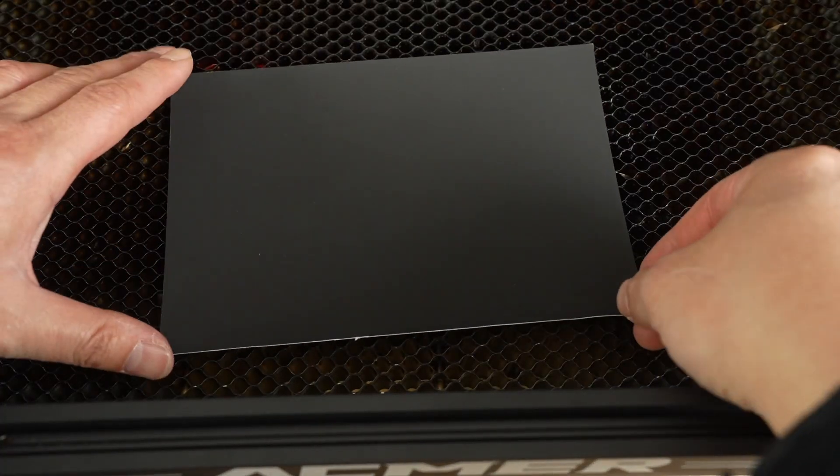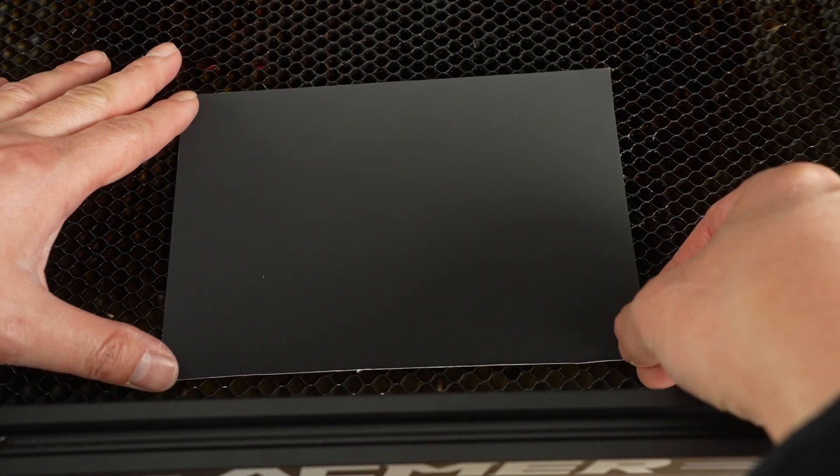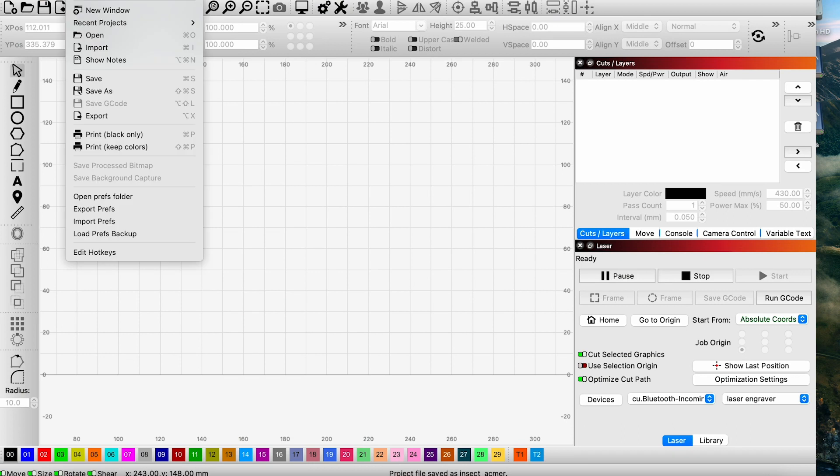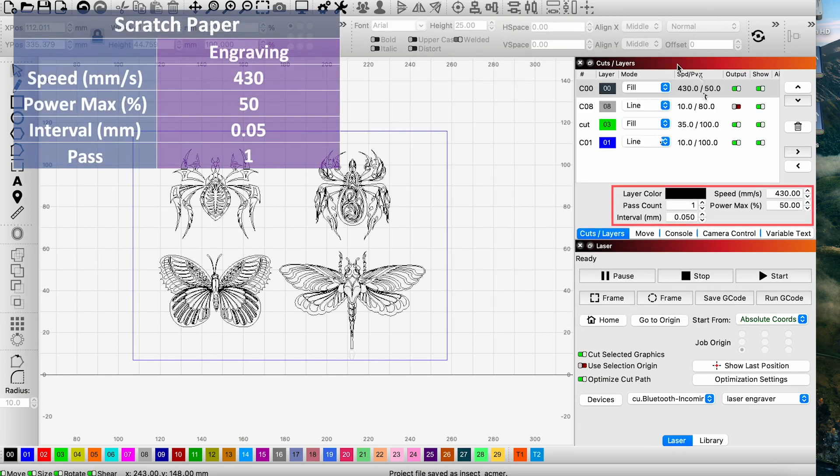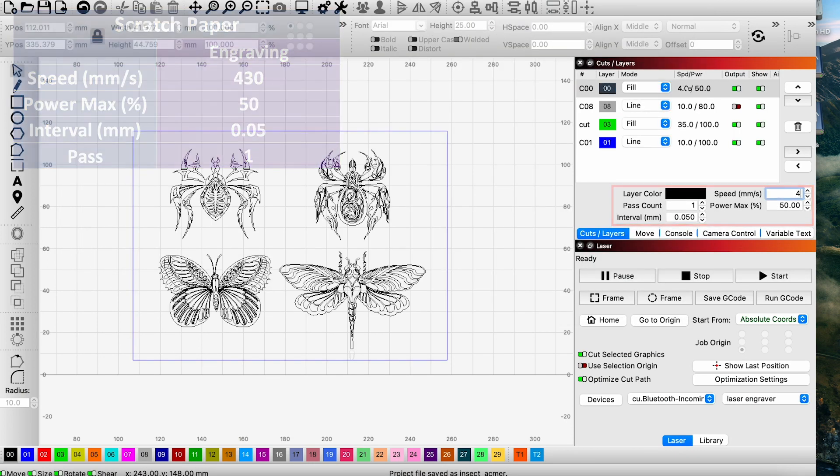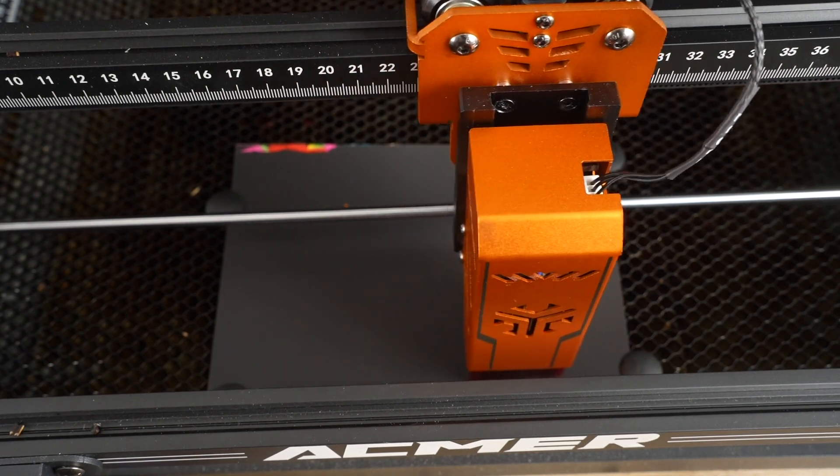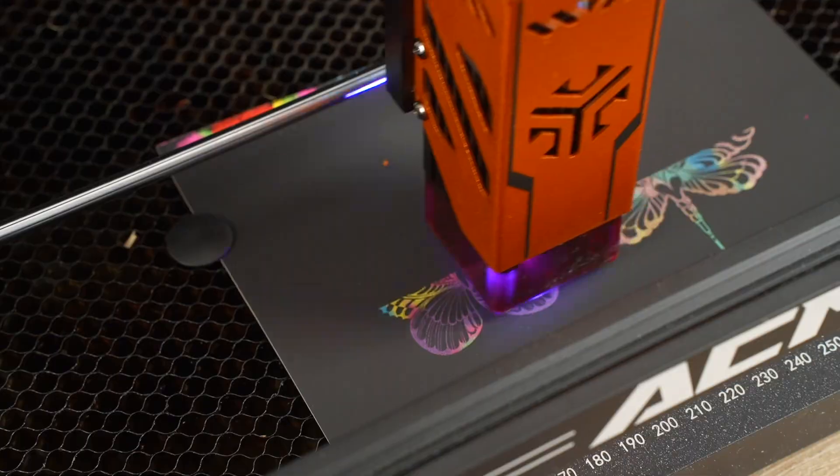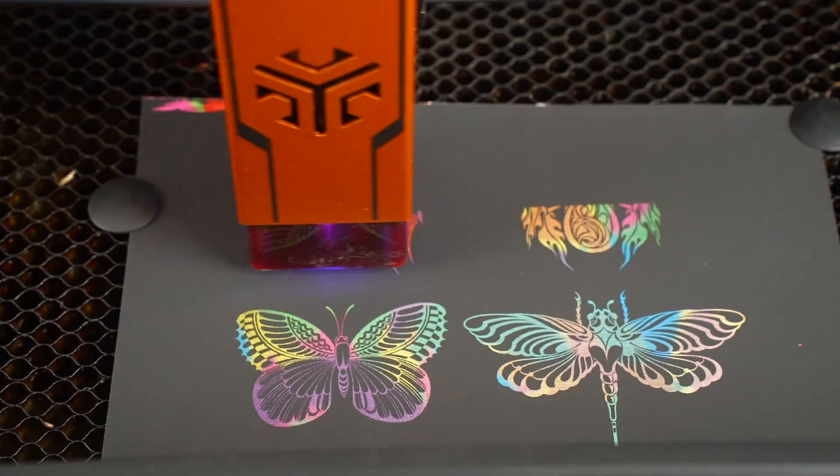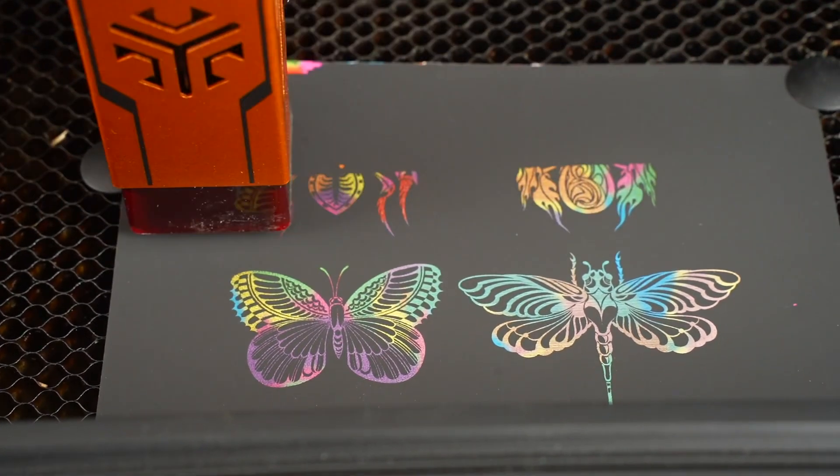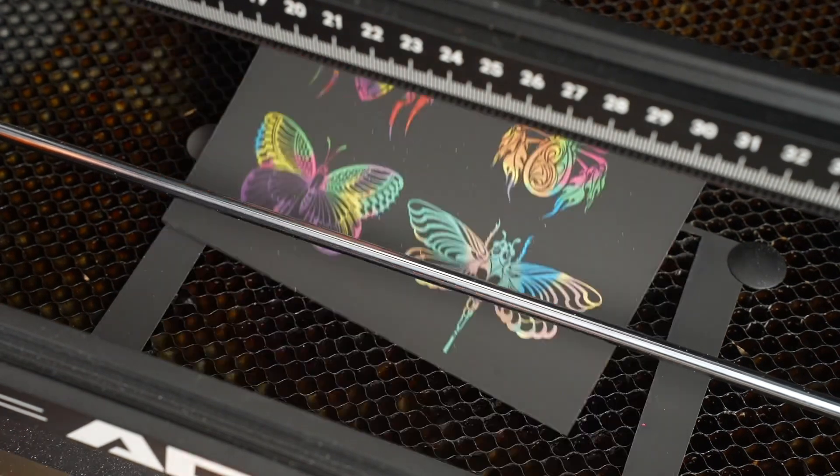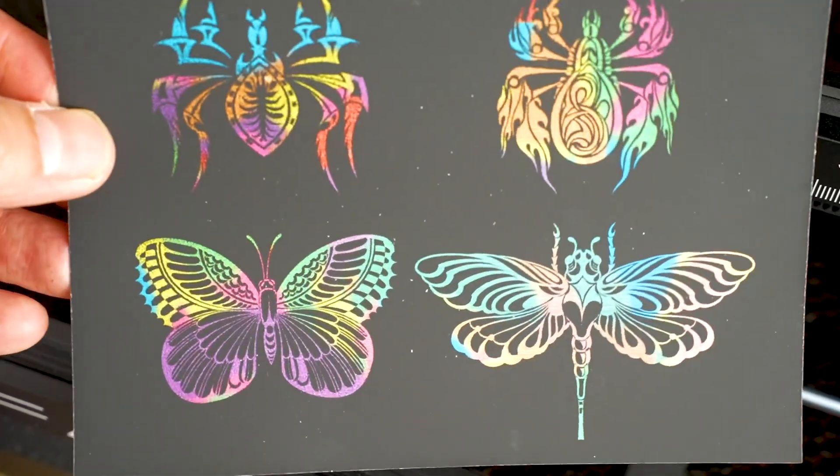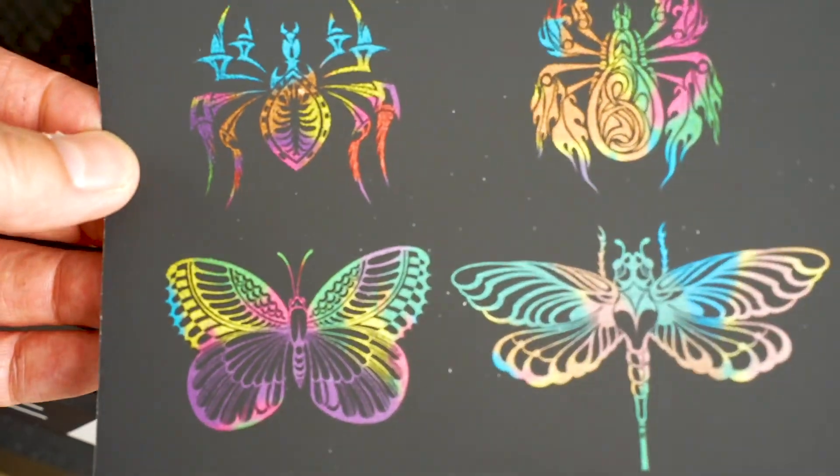Moving on, we opted for something unique. Placing a scratch paper, we endeavored to engrave an image on it. Employing a speed of 430mm per second and 50% power, it took 12 minutes to complete. The scratch card yielded a vibrant and colorful effect, resulting in a truly stunning outcome.